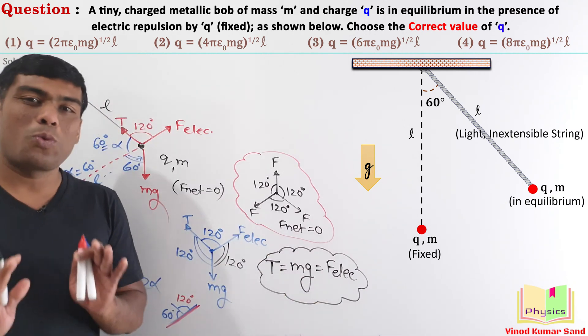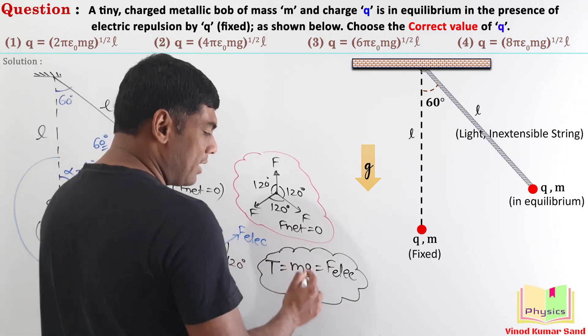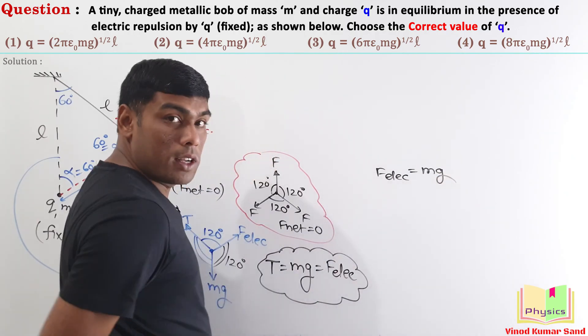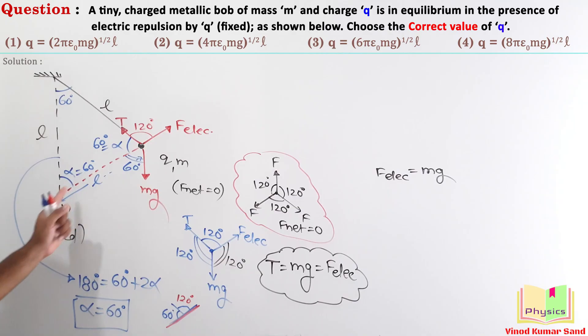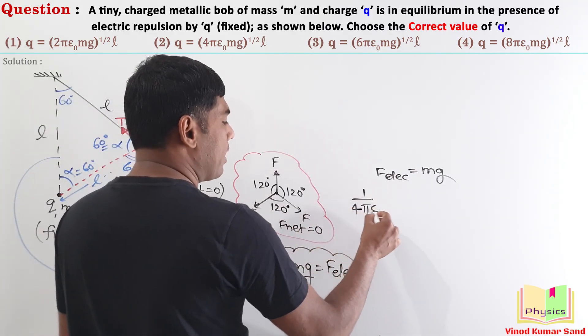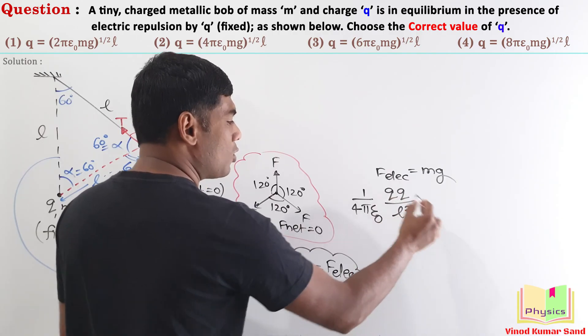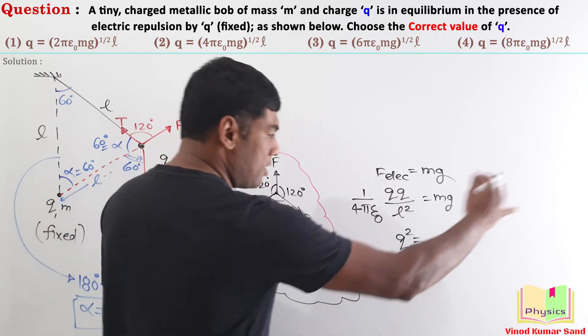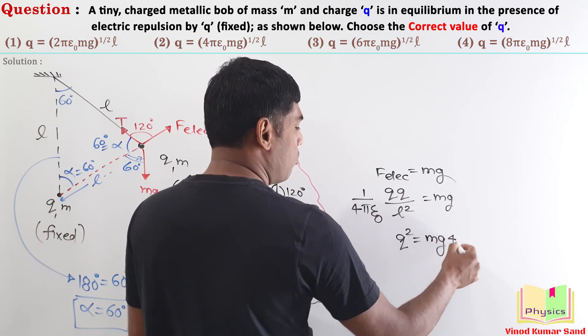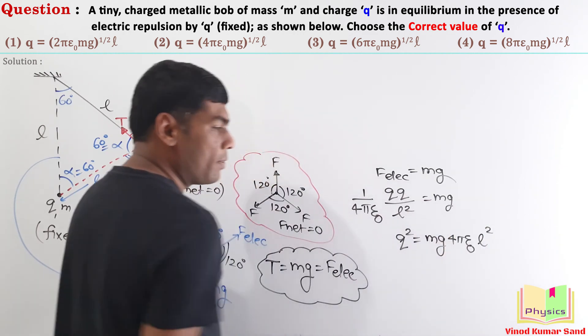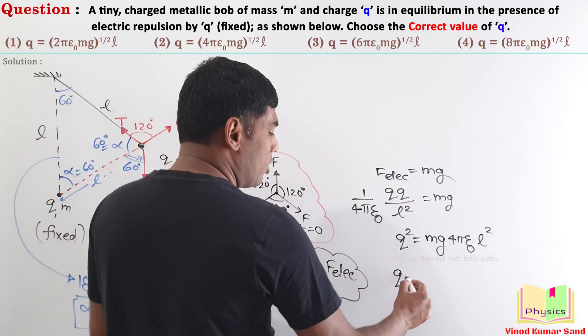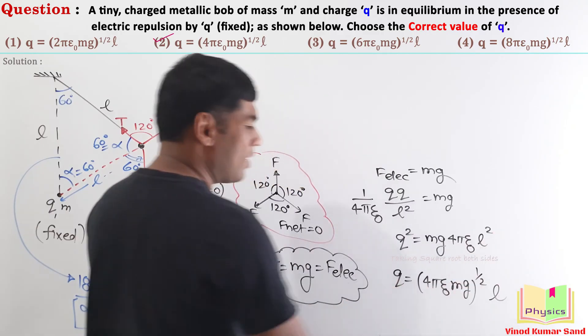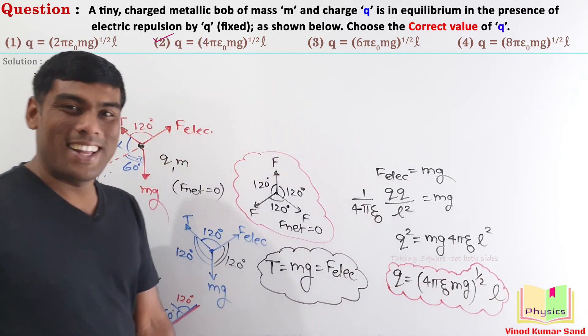Now, our task was to obtain the value of Q. For that, utilizing this expression, we now know that electric force is equal to Mg. Electric force can be written using Coulomb's law. Writing the data here, 1 by 4 pi epsilon naught QQ upon L square is equal to Mg. Our target is Q. So, keeping the Q square in the LHS and shifting everything else in the RHS, Mg 4 pi epsilon naught L square. Taking square root both side, the Q would come out to be 4 pi epsilon naught Mg power half and length L. This is the final answer.